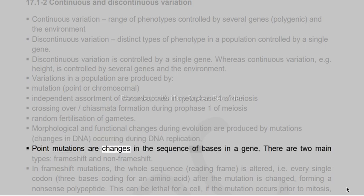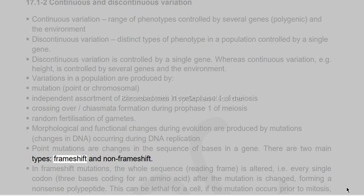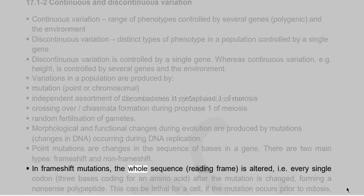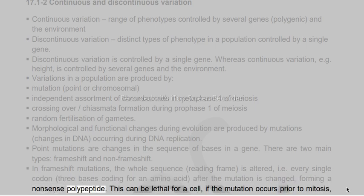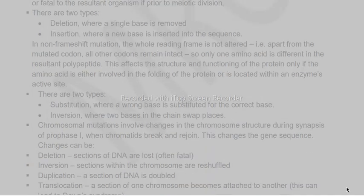Point mutations are changes in the sequence of bases in a gene. There are two main types: frameshift and non-frameshift. In frameshift mutations, the whole reading frame is altered — every single codon (three bases coding for an amino acid) after the mutation is changed, forming a nonsense polypeptide. This can be lethal for a cell if the mutation occurs prior to mitosis, or fatal to the resultant organism if prior to meiotic division.